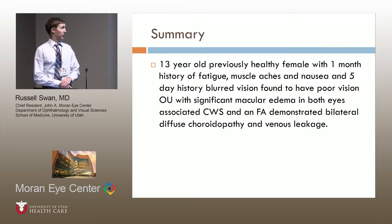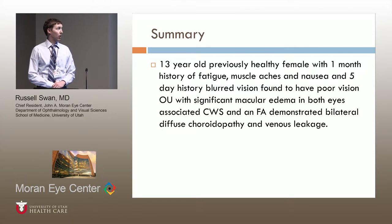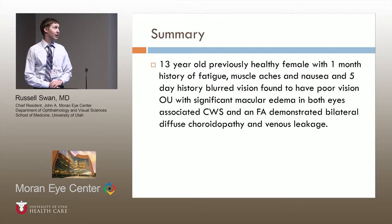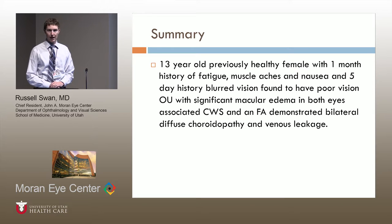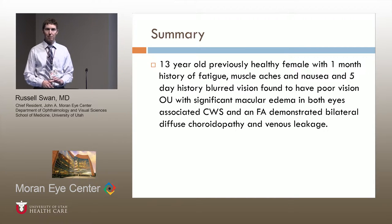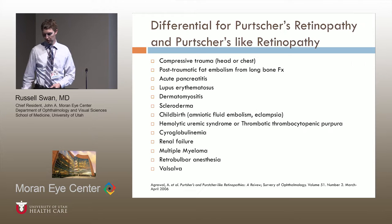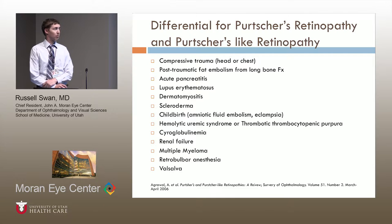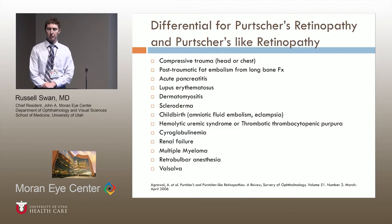In summary, we have a 13-year-old previously healthy female with a one-month history of fatigue, muscle aches, nausea, and a five-day history of bilateral blurred vision. On exam, she has diffuse bilateral macular edema with associated cotton wool spots or Purtscher-flecken-like changes, and an FA demonstrating bilateral diffuse choriopathy with venous leakage. This initially reminded us of a Purtscher's-like retinopathy, with cotton wool spots and nerve fiber layer involvement with macular edema centered around the posterior pole.